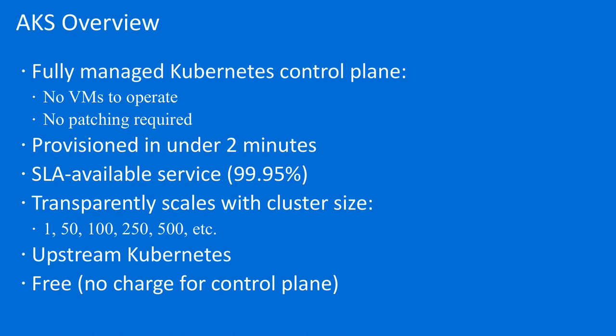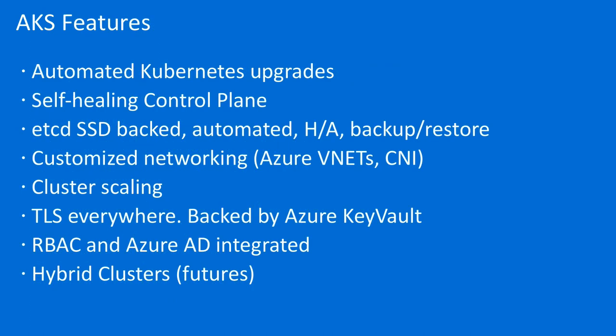With AKS, the good news is there are no VMs to work with and no patching required — we patch and upgrade the cluster for you. There's a 99.95% SLA and I think we can go up to around 500 nodes in a cluster right now. Some of this may be less interesting for the .NET folks, but the notable feature here is hybrid clusters.